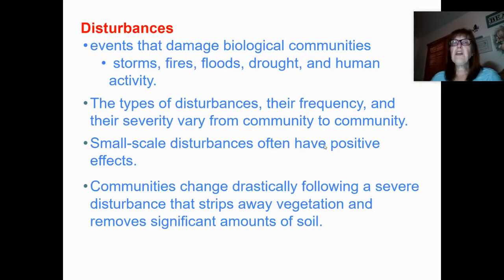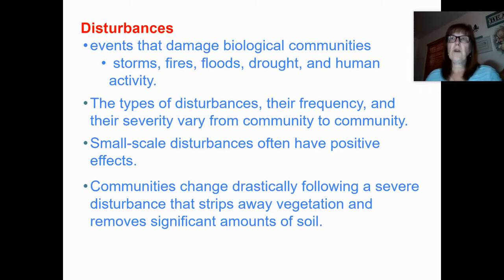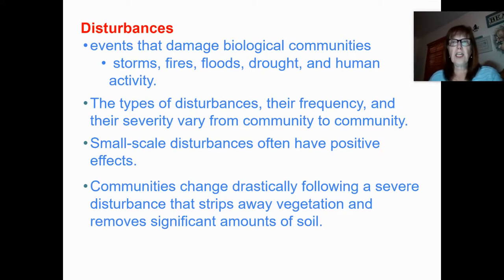Disturbances are events that damage biological communities — storms, fires, floods, drought, and human activities like removing all the sea stars. These can disrupt entire communities. Small-scale disturbances often have a positive effect, but large-scale disturbances can have very severe effects. Think about the tsunami that wiped out a large population of organisms in Japan — the community in that area totally and drastically changed.